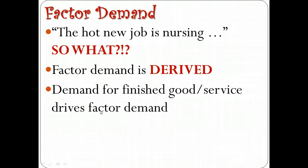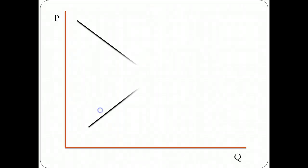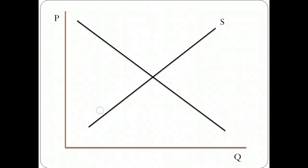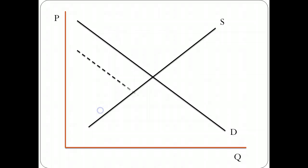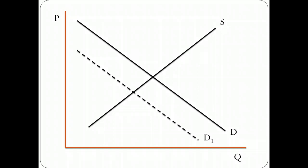Another example: suppose a study comes out saying that drinking coffee increases the likelihood of cancer. We could look at the market for coffee bean pickers and say there's an equilibrium point between supply and demand. But with this new study, people will want to drink less coffee, so there's less need for coffee pickers. That would then impact the demand curve for hiring workers to pick coffee beans. That's what we mean by derived demand.